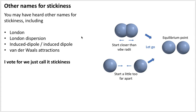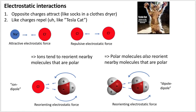Other names for stickiness include London forces, London dispersion, induced dipole–induced dipole, and van der Waals — we'll just call it stickiness. The second part of the big divide is electrostatic interactions: opposite charges attract, which you may have encountered when pulling socks from a clothes dryer. Like charges — positive-positive or negative-negative — repel each other, giving us attractive or repulsive electrostatic forces between ions.